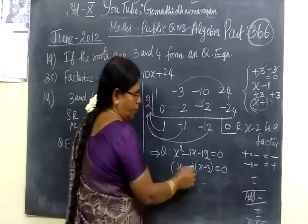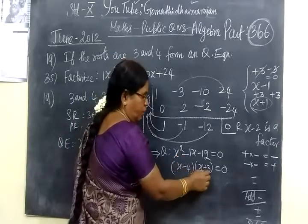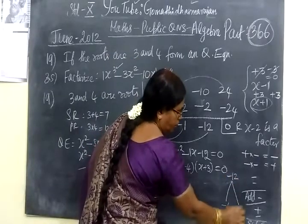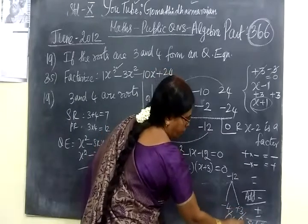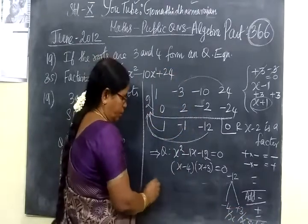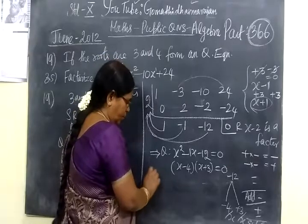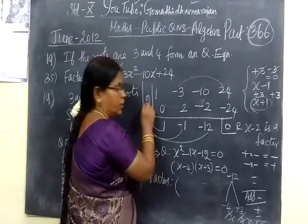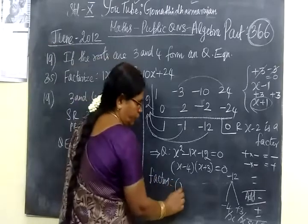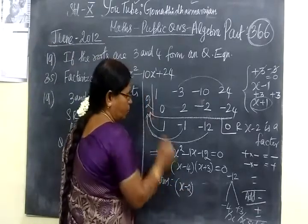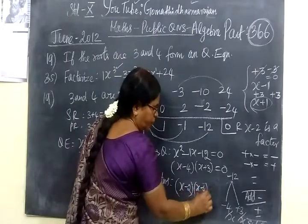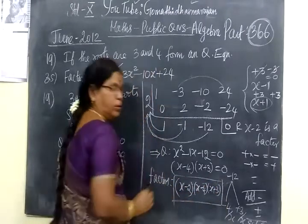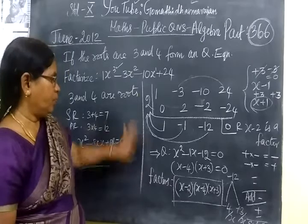So now you know: minus 4 plus 3 minus 1, and minus 4 into 3 is minus 12. RMR 4 is equal to 0. This is equal to 0. Therefore we have 3 factors. In that way, plus 2 equal to 0 means we are writing minus 2. When you take and write, the sign is equal to the opposite. x minus 4 equals 0, x plus 3 equals 0, among the 3 factors.